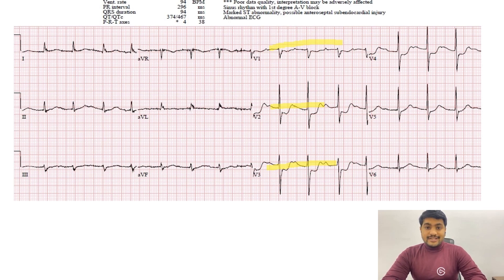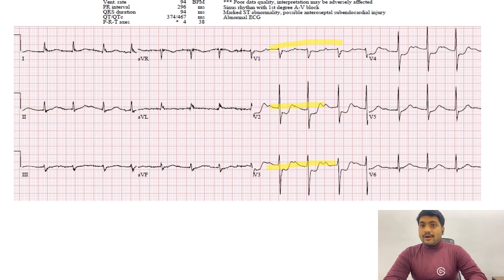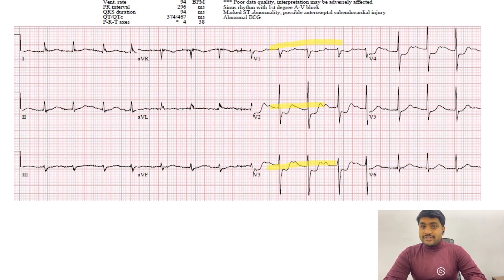Posterior wall MI individually is very rare. What we see is it in combination with inferior wall MI, because the RCA that supplies the inferior wall — if that gets blocked it can give rise to posterior wall MI. But in 15 to 20 percent of patients, we can also see posterior wall MI in combination with lateral wall MI or anterior wall MI, but that is rare.